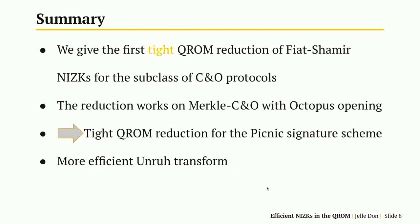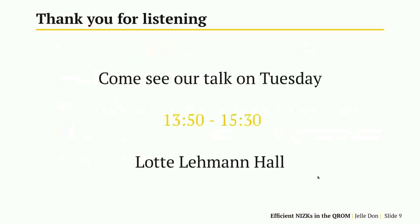In summary, we give the first tight QROM reduction of a Fiat-Shamir-based NIZK for the subclass of commit and open protocols. This reduction also works on Merkle tree-based commit-and-open protocols with octopus openings. Amongst other things, this yields a tight QROM reduction for the PICNIC signature scheme. Finally, we give a more efficient version of the Unruh transform. Thank you for listening — I hope to see you at our presentation on Tuesday from 13:50 to 15:30 in the Lotte-Lehmann Hall.